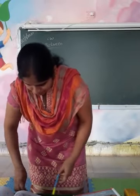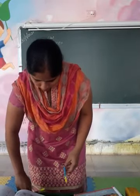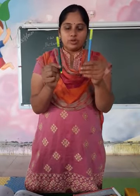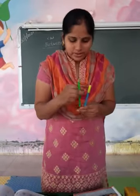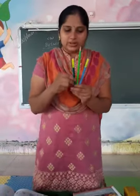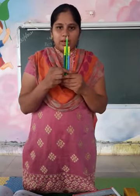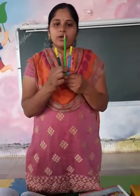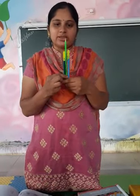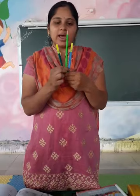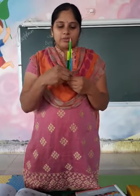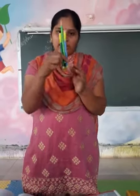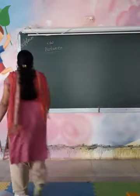Now see — these two are sketch pens: green sketch pen and blue sketch pen. And I have a pencil. Can you see the pencil? Where is the pencil? The pencil is between the green and blue sketch pens. Means pencil is between green and blue sketch pen — in between both sketch pens, the pencil is there.